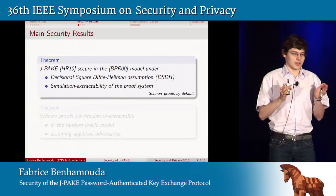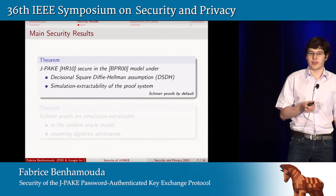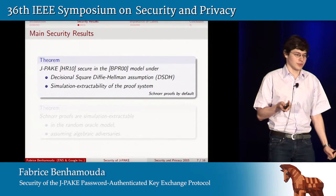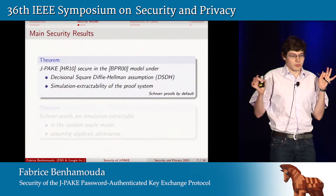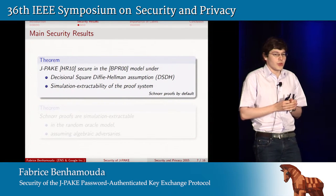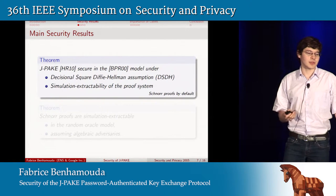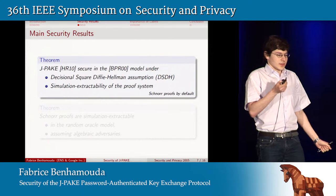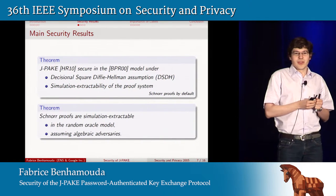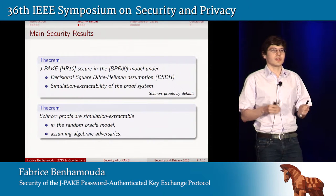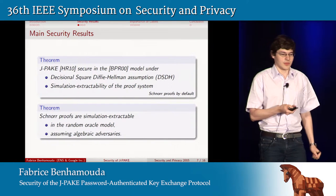Back to the main security result: we show that the JPEG protocol as proposed in the original paper is secure under the DSDS assumption, which is a classical assumption, and assuming that the proof system used in the protocol is simulation extractable. We then show that the proof system used in the protocol — which is Schnorr proofs — is actually simulation extractable with some restriction, but that's acceptable in practice.